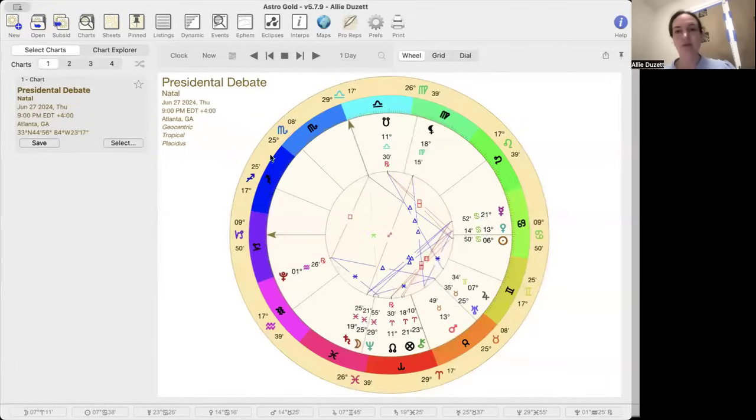Let's go to a one-chart view. This is the chart of the moment that this presidential debate started at 9 p.m. Eastern time in Atlanta, Georgia. With a 9-degree Capricorn rising right there, and here we have a 29-degree Libra midheaven. I hadn't even thought about that until right this minute as I'm looking at it.